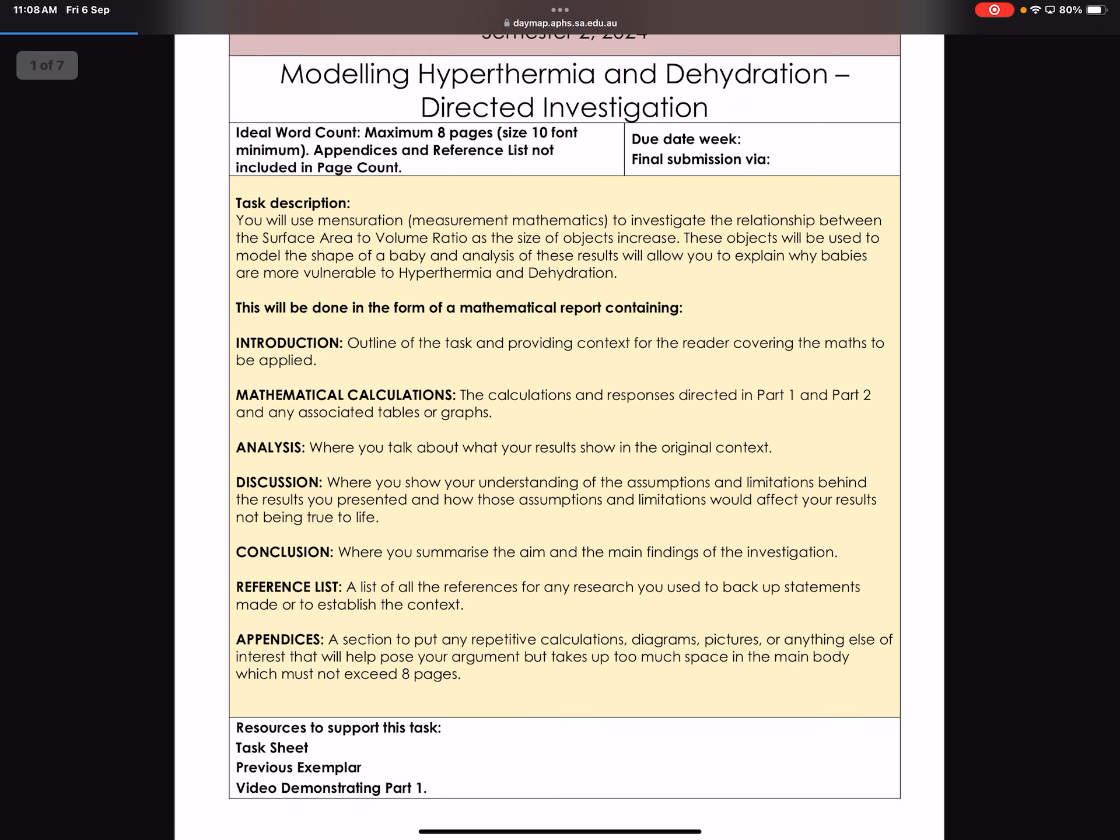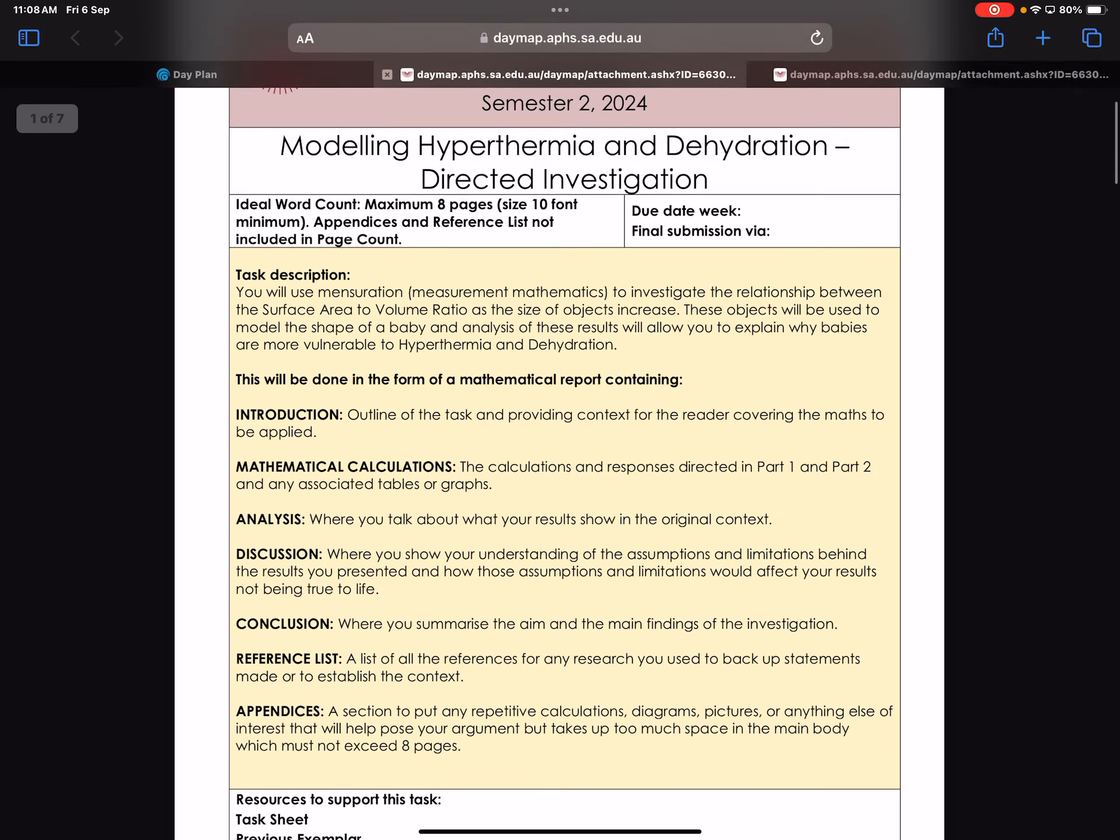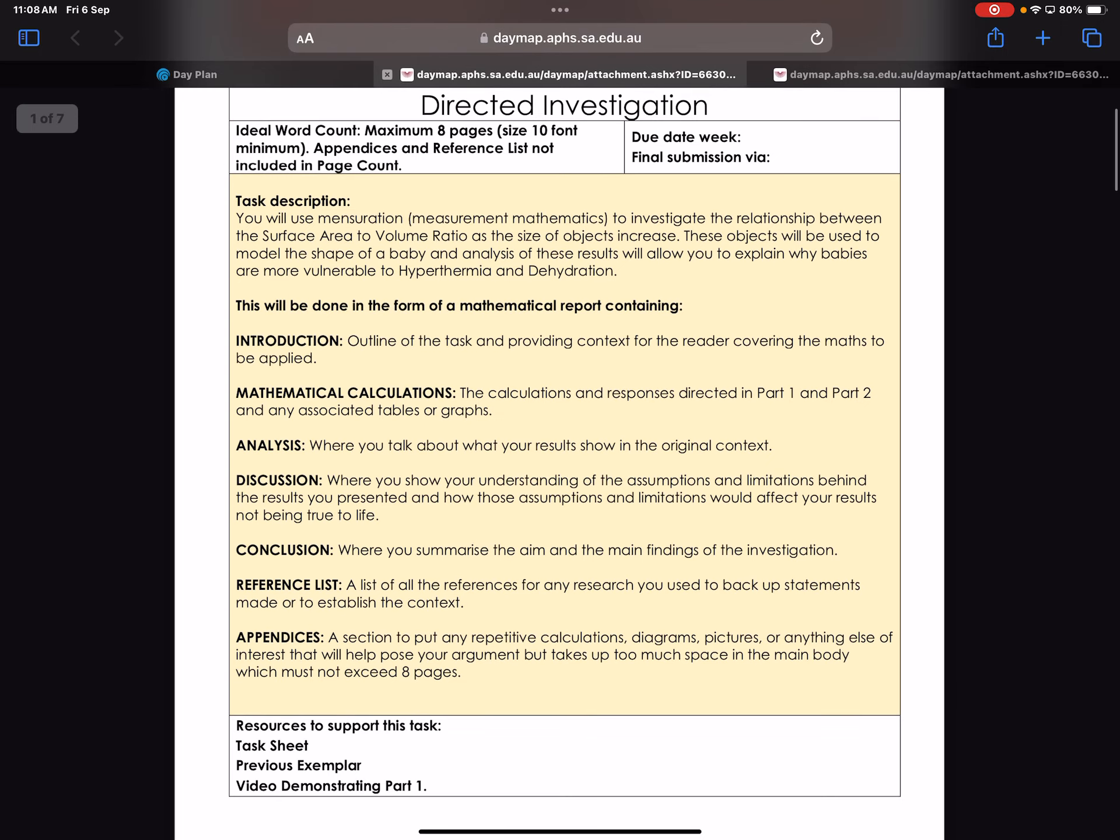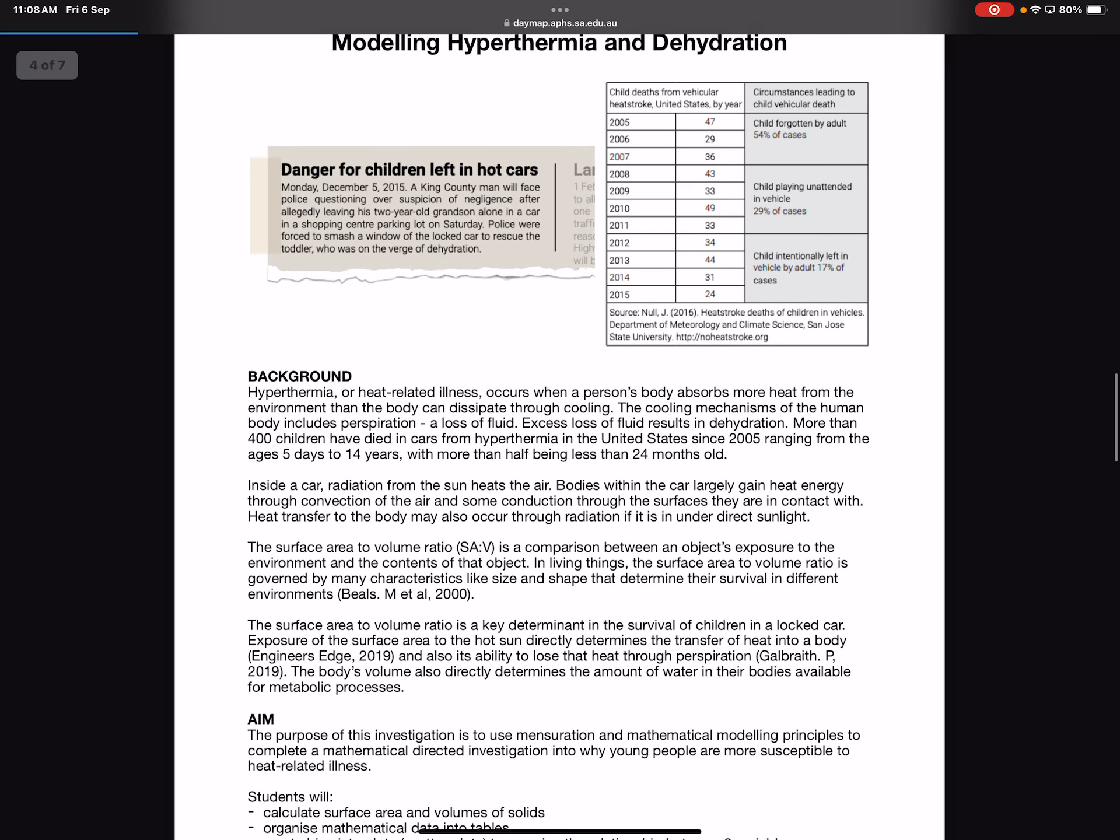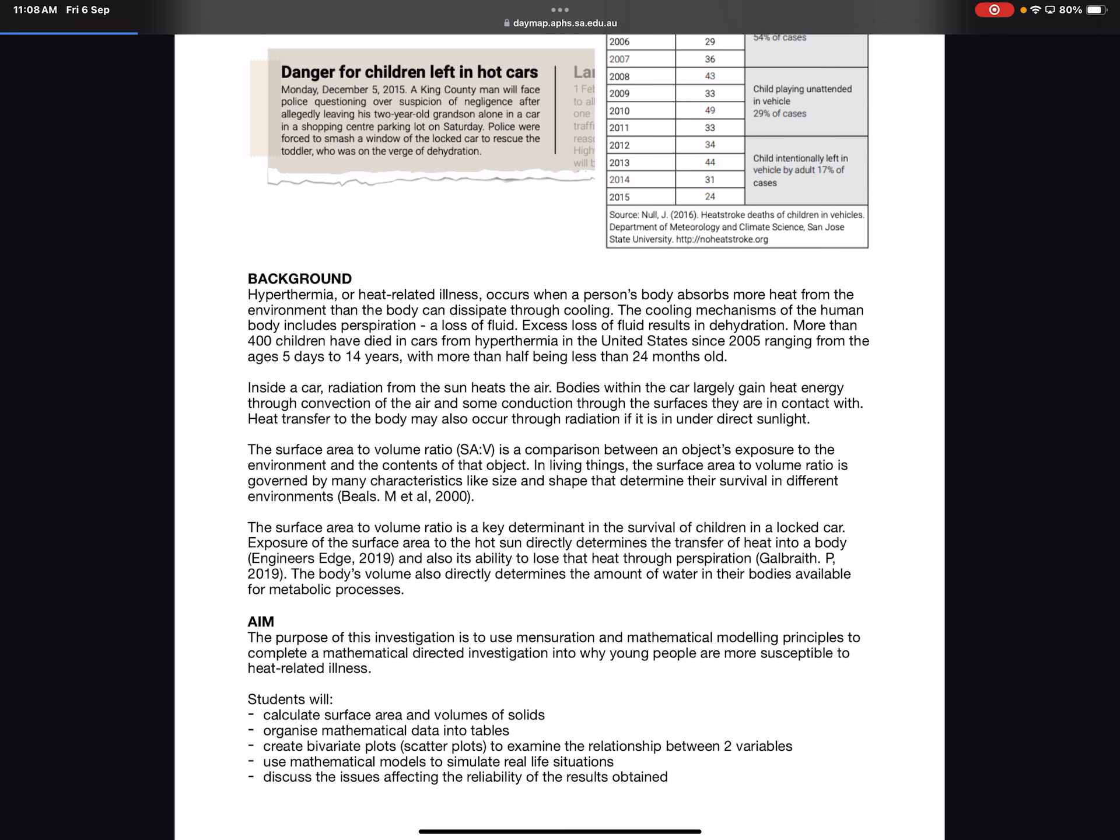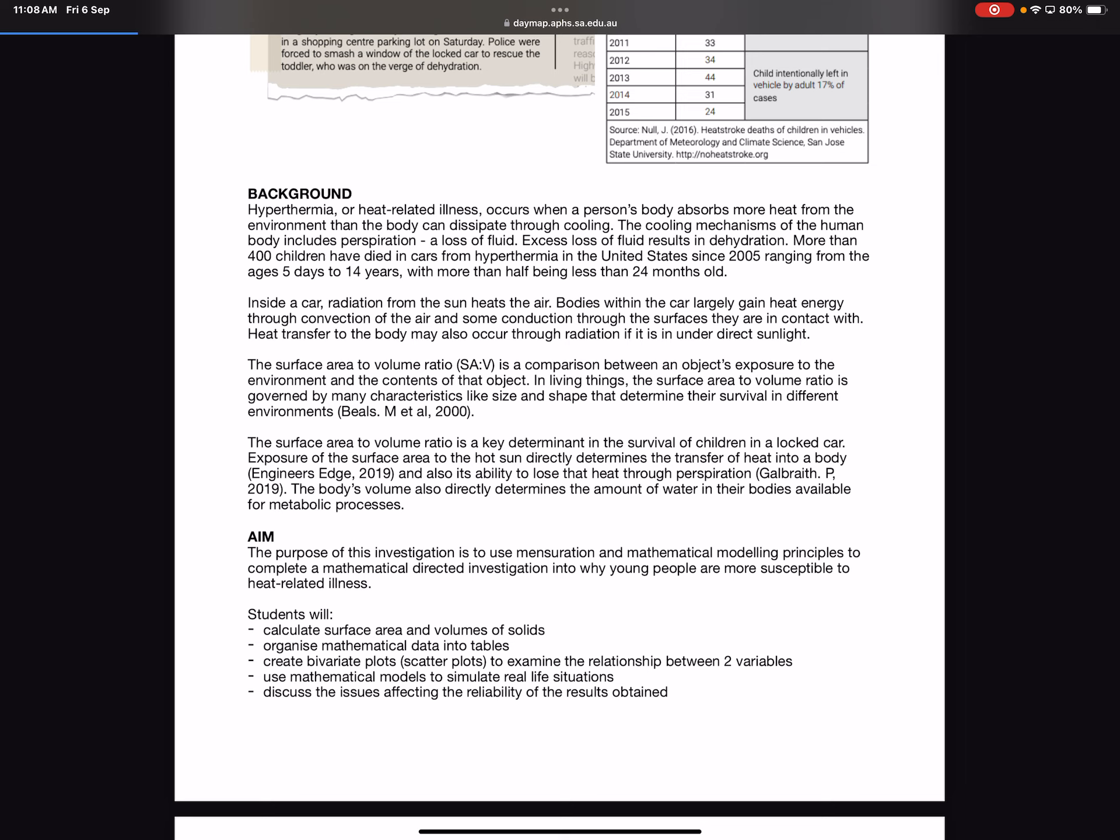You'll see that I've given you an example of someone's work from a few years ago. What we're looking at is the surface area to volume ratio. If you scroll down, that's the rubric that I'm going to mark you on. Here is some context that I researched about kids dying, a lot of them dying in the United States, et cetera. And some research showing that the surface area to volume ratio is key to the survival of children in a locked car. Exposure of the surface area to the hot sun, because where are you getting heat through? Where's the heat going through? Your skin. That's your surface area. Your ability to fight the heat is the amount of water in your body. What determines that? Not your skin. It's how much space you take up. Your volume.